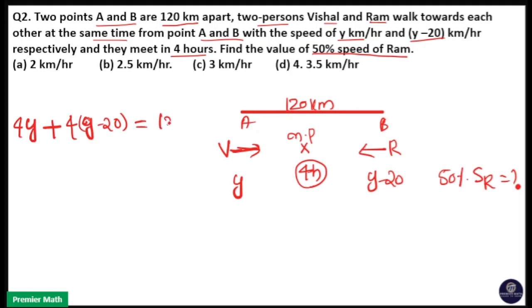So this equals the total distance traveled, 120 km. If I cancel 4, this will be 30. That is Y plus Y minus 20 equals 30, which is 2Y minus 20 equals 30.